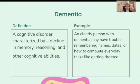Dementia: a cognitive disorder characterized by a decline in memory, reasoning, and other cognitive abilities. An elderly person with dementia may have trouble remembering names, dates, or how to complete everyday tasks like getting dressed.